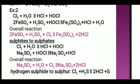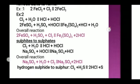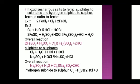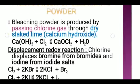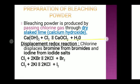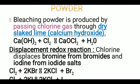The reaction of hydrogen sulfide: Cl2 plus H2S gives 2HCl plus S. Bleaching powder is produced by passing chlorine gas through dry slaked lime — that is calcium hydroxide, Ca(OH)2. The chemical reaction is: Ca(OH)2 plus Cl2 gives CaOCl2 plus H2O. CaOCl2 is bleaching powder, also called calcium oxychloride.